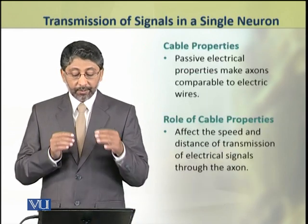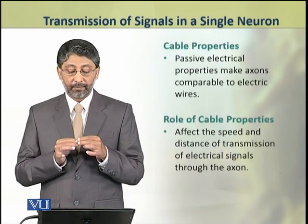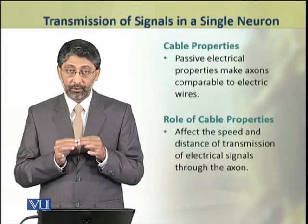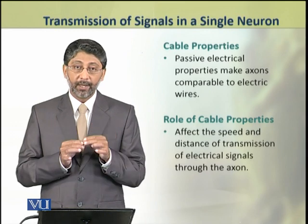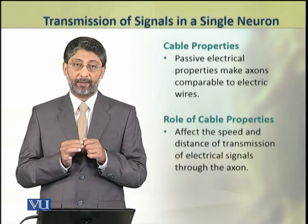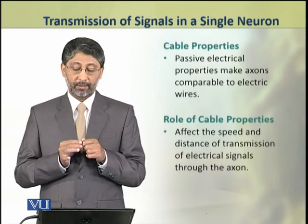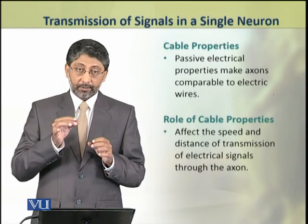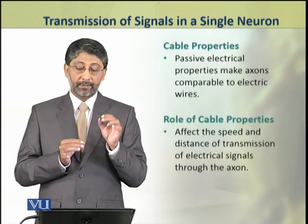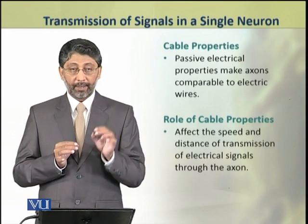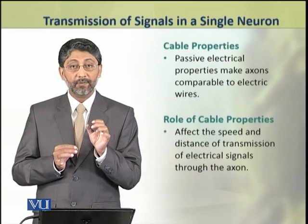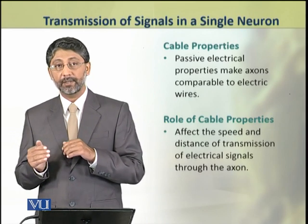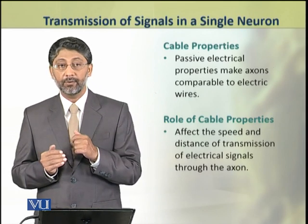These cable properties make the axon comparable to an electrical wire. These cable properties affect the speed and distance of transmission of electrical signals in the neurons.